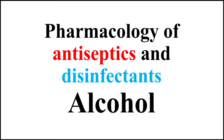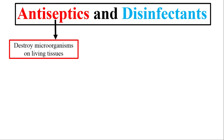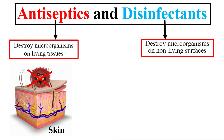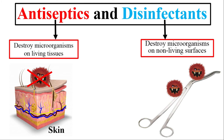Let's start with some short definitions. Antiseptics are antimicrobial substances that are applied to living tissue, such as skin, to reduce the possibility of infection by killing microorganisms or inhibiting their growth. Disinfectants are chemical agents designed to inactivate or destroy microorganisms on non-living surfaces, such as surgical instruments.